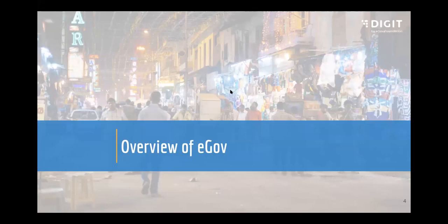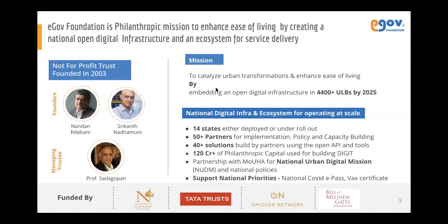eGov is a non-profit organization started back in 2003, specifically focused on the urban governance domain. In recent times, we've transitioned from focusing just on urban to launching other missions as well. It was started by Nandan Nelkani and Shrikant Nadamuni, who was the CTO of Aadhaar. Because we're a non-profit, we don't charge any revenue from partners or state governments — we are mostly funded by philanthropies.